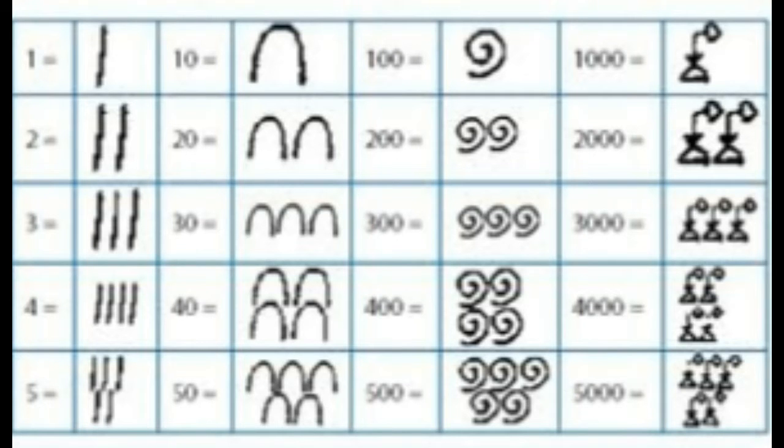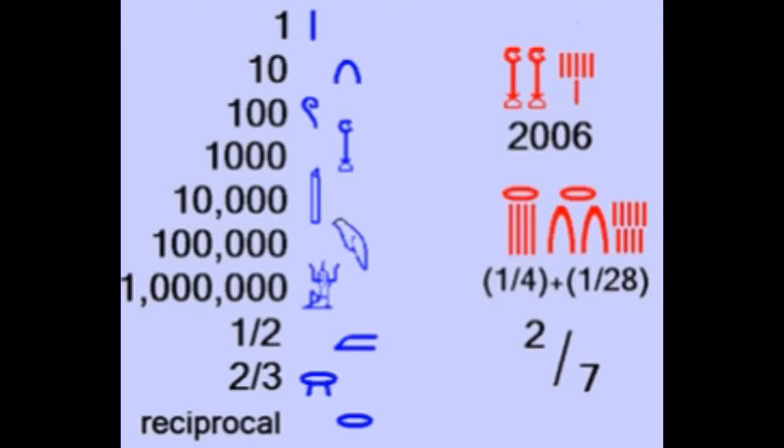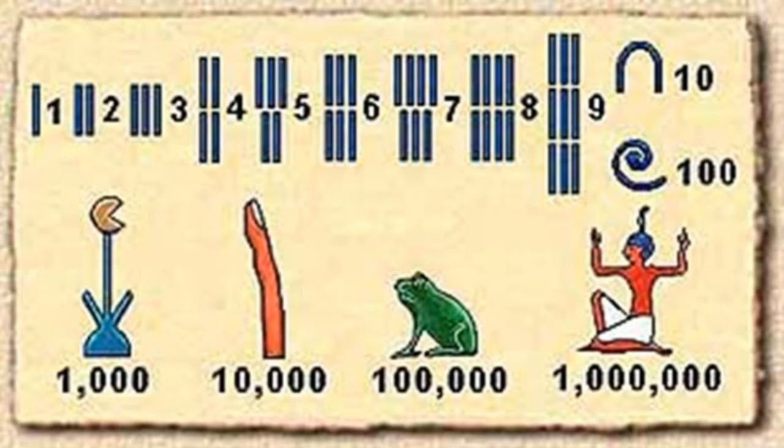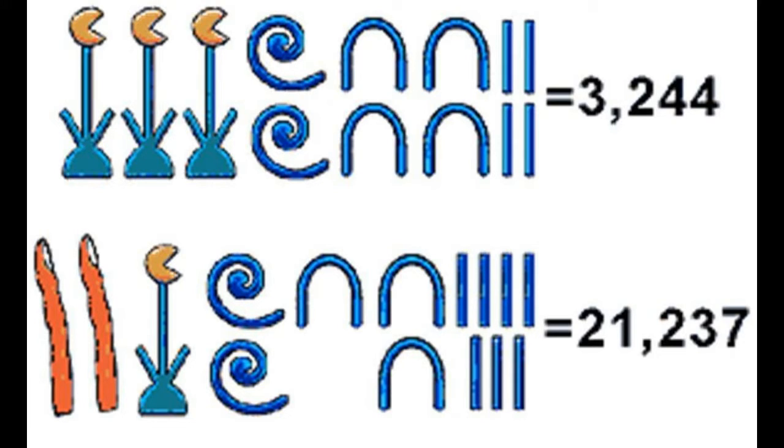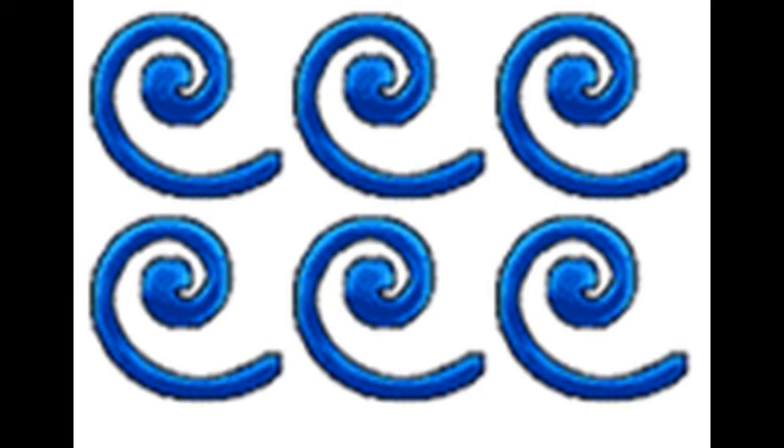A symbol that looks like a circle was also used to represent infinity, because of a journey through an endless circle. Multiples of these values were expressed by repeating the symbol as many times as necessary. As they had no concept of zero, there was no symbol for it.